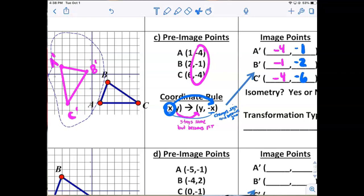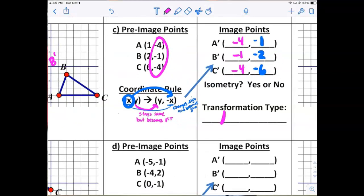So it was a rotation, and rotations are rigid motions because they preserve distance and angle measure.